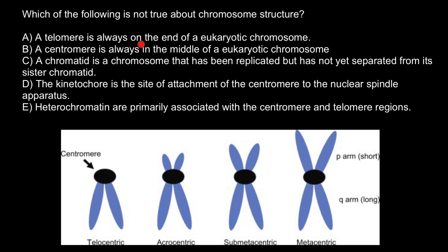Answer A: a telomere is always on the end of the eukaryotic chromosome. This is true. Telomeres are found at the tips of the chromosomes, and telomeres protect chromosomes from degradation.